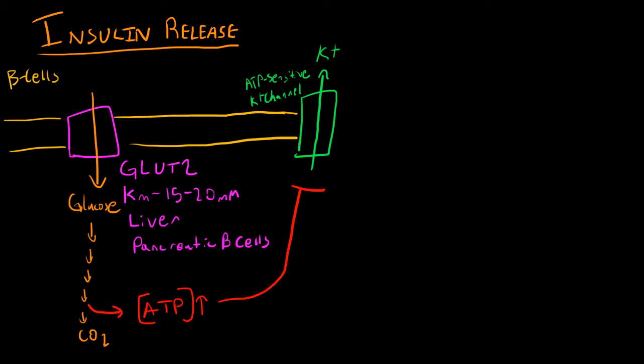And by doing so, we have changed our membrane potential, we have depolarized it. And this can be detected by a voltage-gated calcium channel. So normally, this channel is closed, but once you depolarize the membrane potential enough, we can let in calcium.